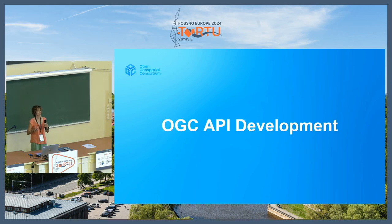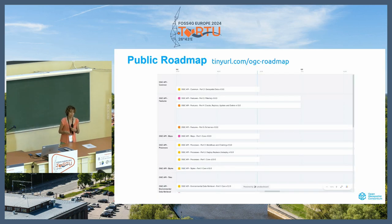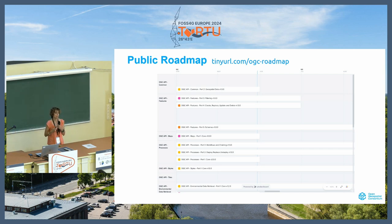Regarding how these APIs are developed and how you can get involved: first of all, you can check the public roadmap, available at a specific URL, where you can see the state of development of each one of the OGC API parts. You can see forecasts in terms of when they're going to reach publication, with estimations.